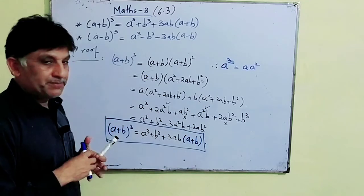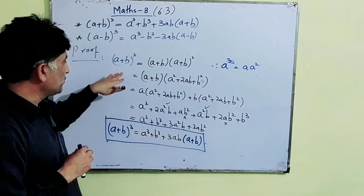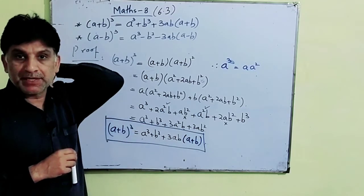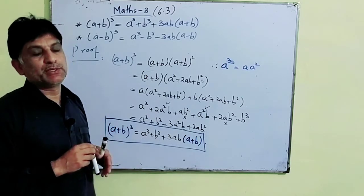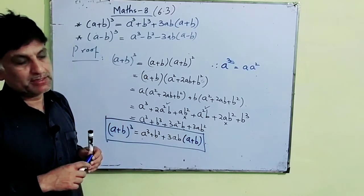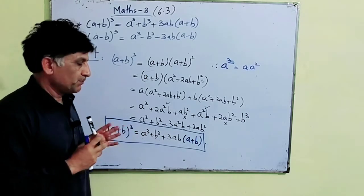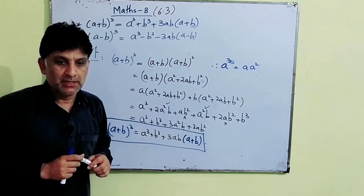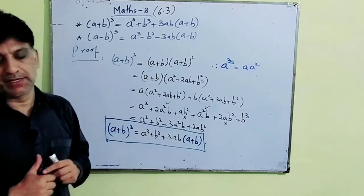So this formula is proved: (a + b)³ = a³ + b³ + 3a²b + 3ab², which is also written as a³ + b³ + 3ab(a + b). I hope this proof has been explained clearly. Please practice this proof once so it becomes clear to you.